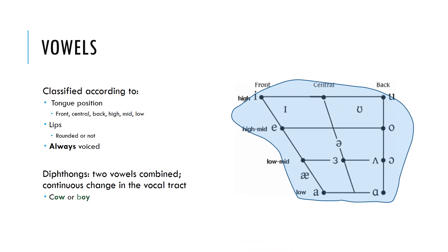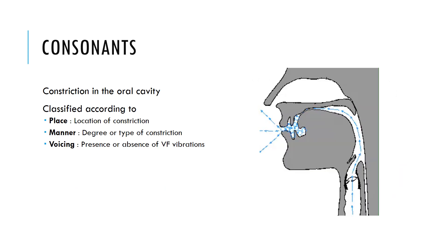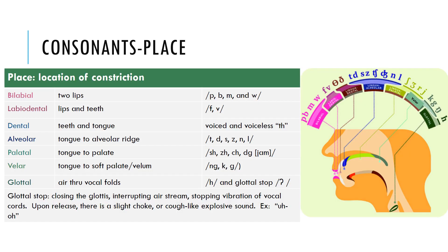Overlaying the tongue shape, we see the front, body, and back. For consonants, there is constriction in the oral cavity — air flows through the glottis, resonates through the pharynx and oral cavity, and constriction with the tongue produces sound. The place is where that constriction occurs. The degree or type of constriction is the manner — how air flows through that constriction. Voicing is the presence or absence of vocal fold vibration. Places of articulation include bilabial, labiodental, dental, alveolar, palatal, velar, and glottal.